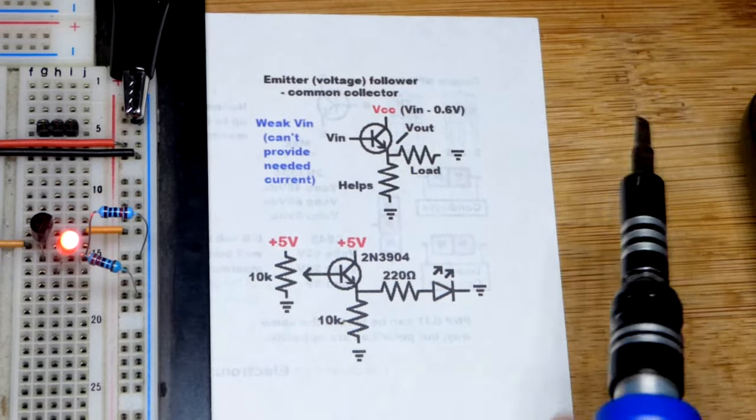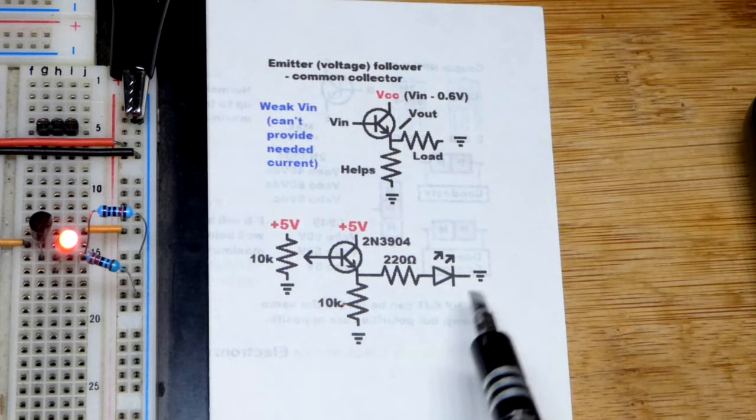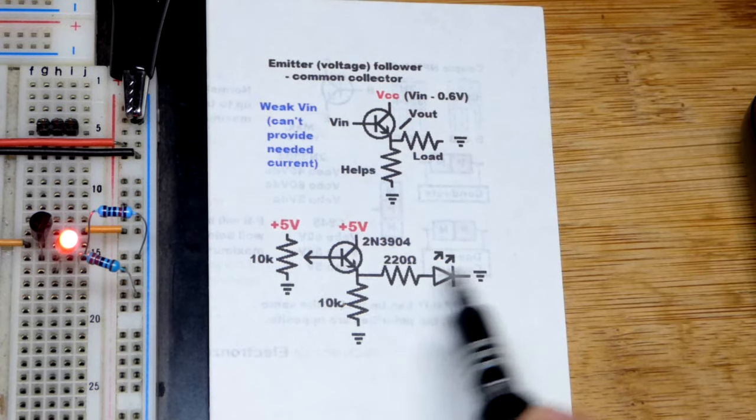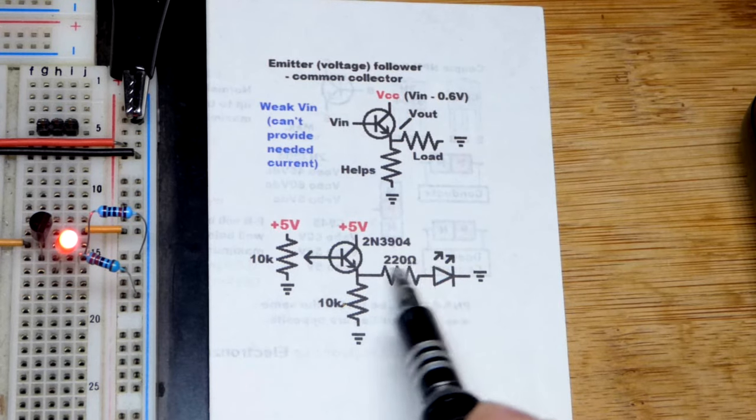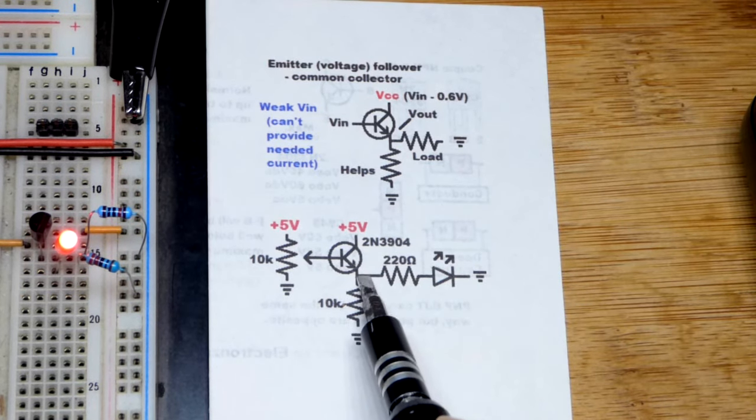For my load, I just used a red LED because you can see it light up right there, 220 ohms, and higher voltage, of course, the brighter it gets. And you need enough voltage to get it to light in the first place.